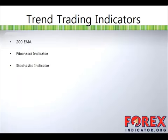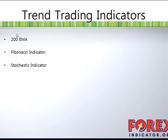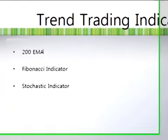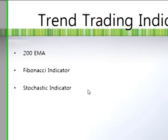So let's go through the indicators that we need. First, you need the 200 EMA, which is the 200 exponential moving average, not the simple moving average. You also need the Fibonacci retracement indicator and the stochastic indicator. For the stochastic indicator, just set the default setting of 5,3,3 and that will do.